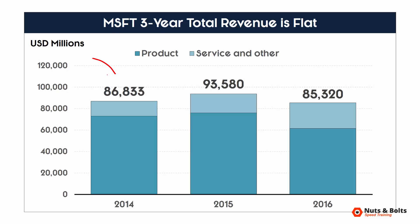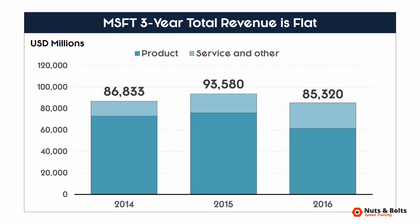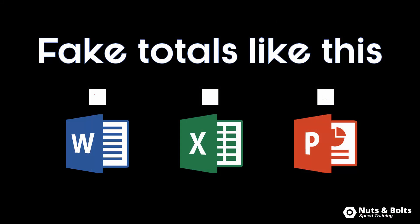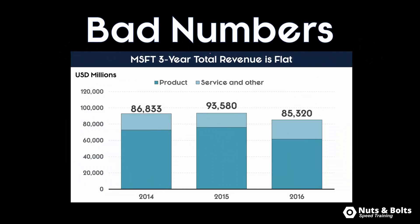Hey Speed Demons. The reason why this column chart might not be trustworthy is there's no such thing as a total data label on top of a stacked column or stacked bar chart. So in Word, Excel, and PowerPoint, what will often happen is people will take their data label from one of the stacks and push it on top of the column and then hard code their numbers in, or they'll add a text box or shape and stick it on top and hard code their numbers in — which means these are fake totals. You're going to end up with some bad numbers in your presentation.